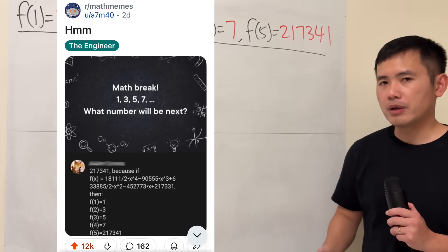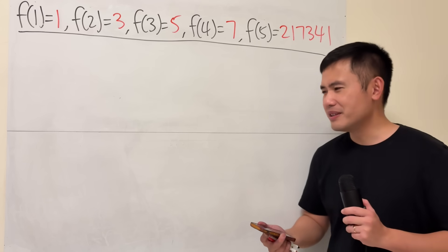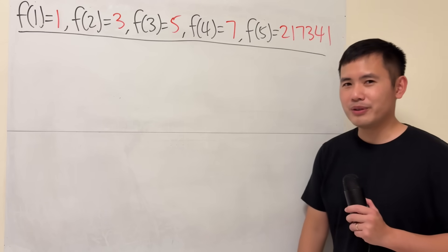Because of this polynomial here. The question is, how can we come up with such a polynomial?